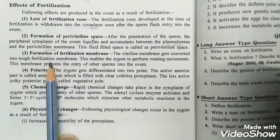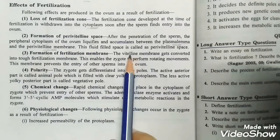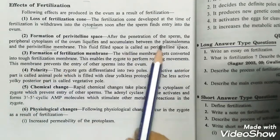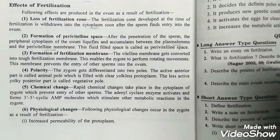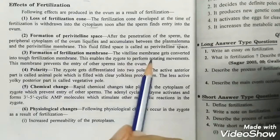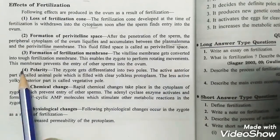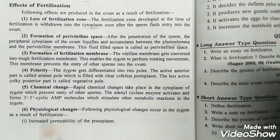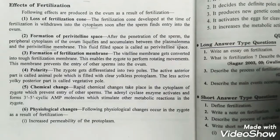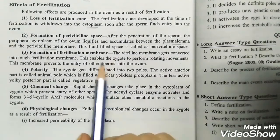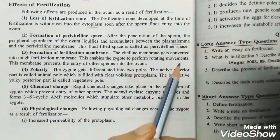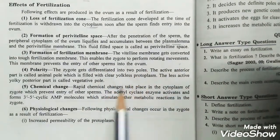The next effect is the formation of the fertilization membrane. The vitelline membrane gets converted into a tough fertilization membrane. This membrane prevents the entry of other sperms into the ovum again — favoring monospermy and not favoring polyspermy. It also enables the zygote to perform rotating movements during embryogenesis.